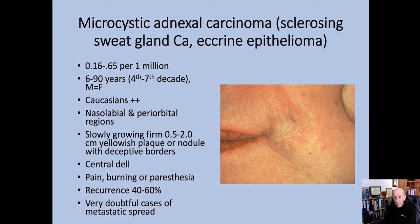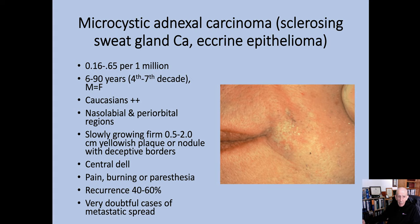Let's start with microcystic adnexal carcinoma. In my experience, this is probably one of the tumours I've seen most often, though this may be referral bias. The two tumours I've seen most are microcystic adnexal and mucinous carcinoma — probably microcystic adnexal. The incidence at its very worst is 0.65 per million, so in the real world it's desperately rare. There's not much to say demographically — you can get it at any age; the youngest I came across was 6 years of age.